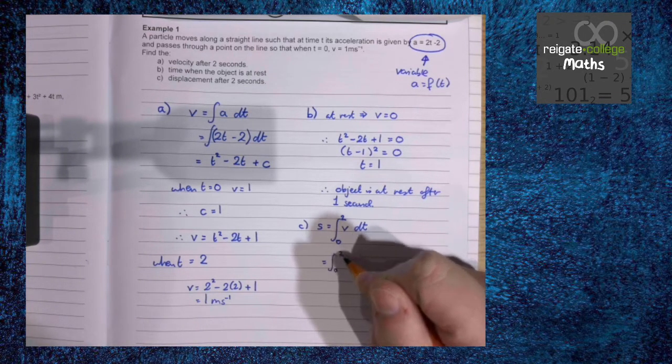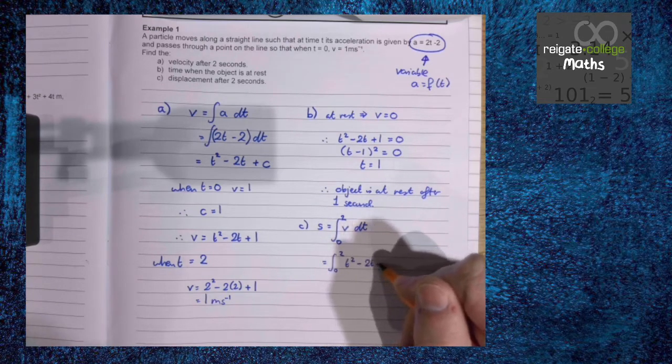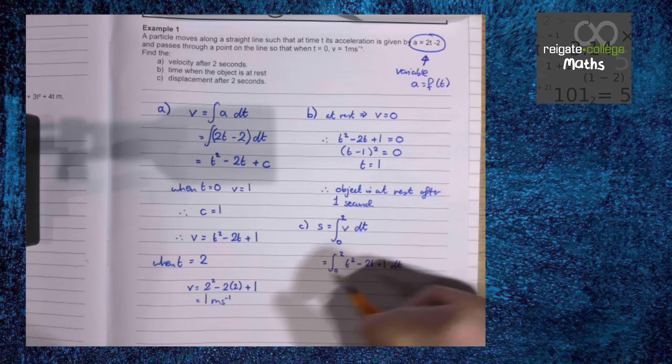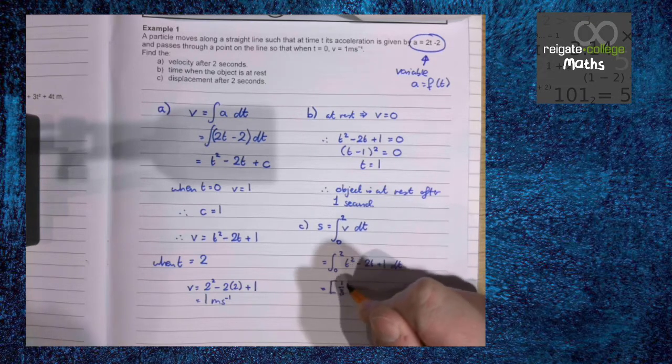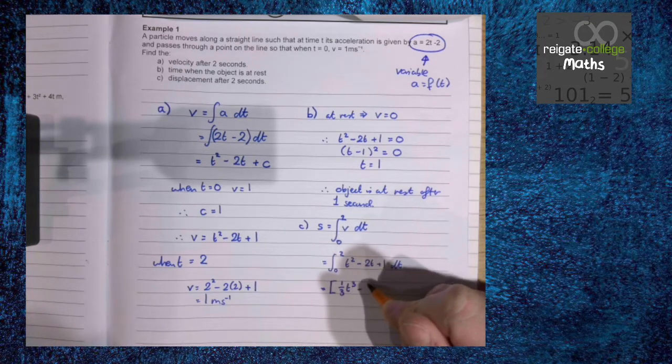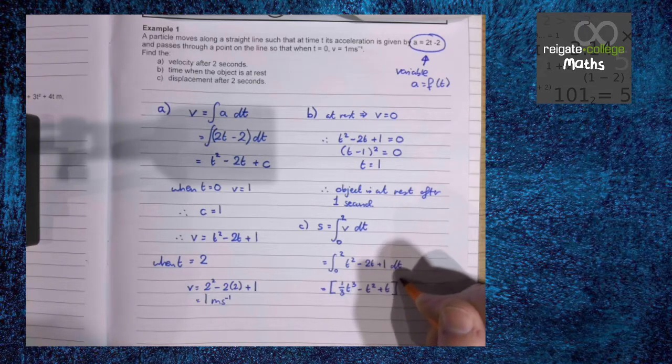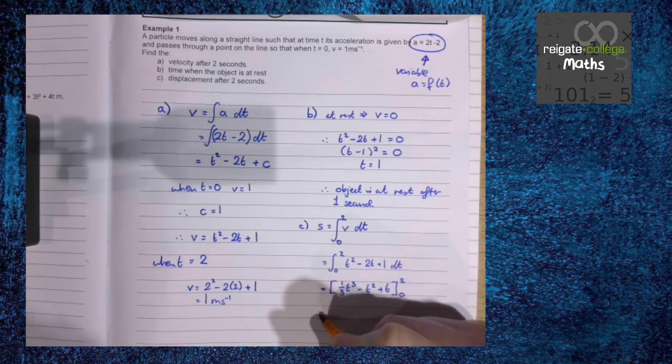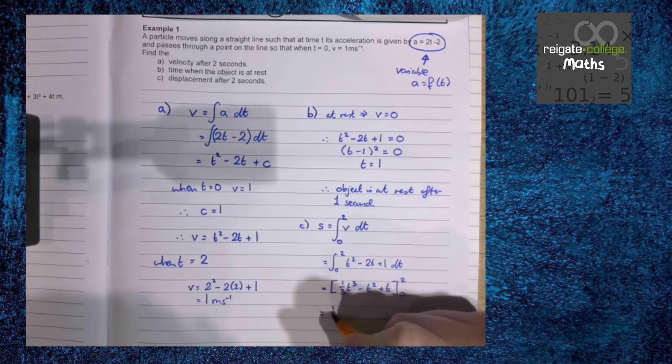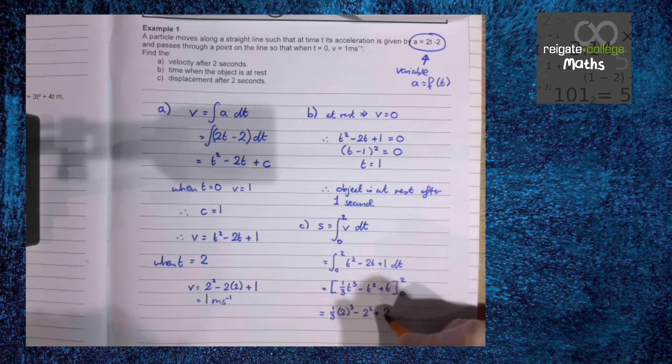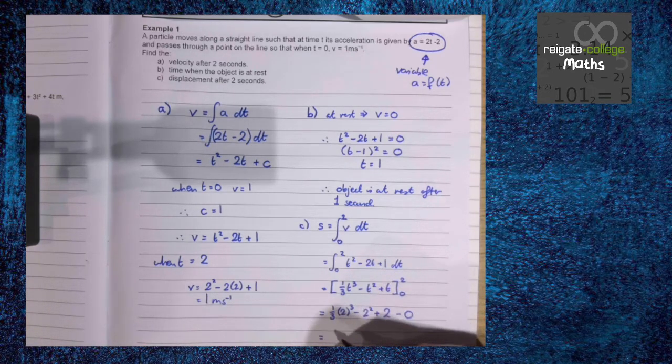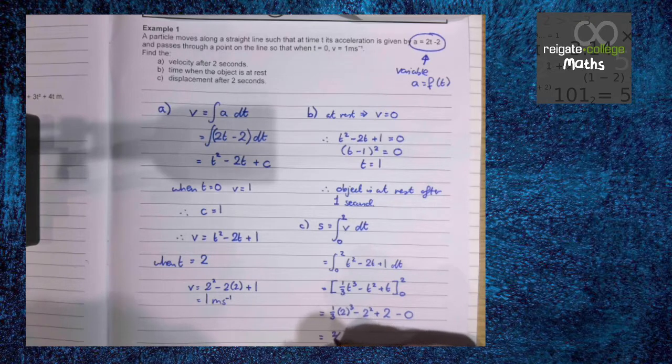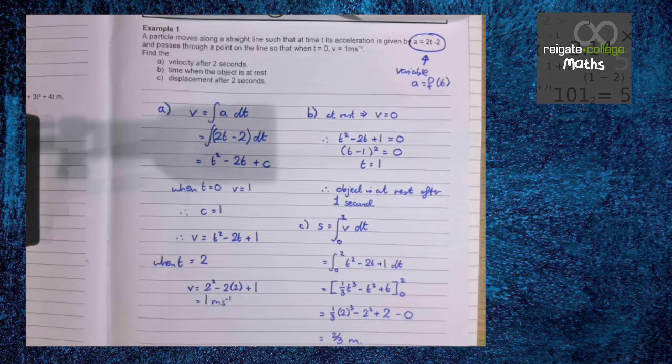So we're doing between 0 and 2, t squared minus 2t plus 1. Integrate as normal, then put our numbers in, and we get 2 over 3 meters. And that's our first example.